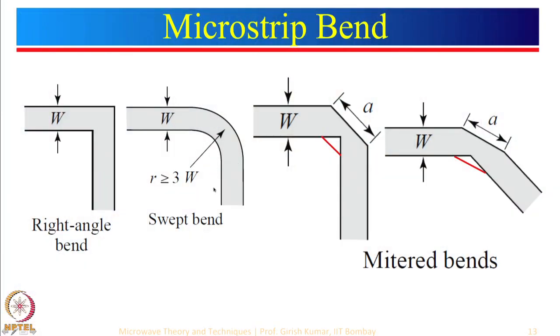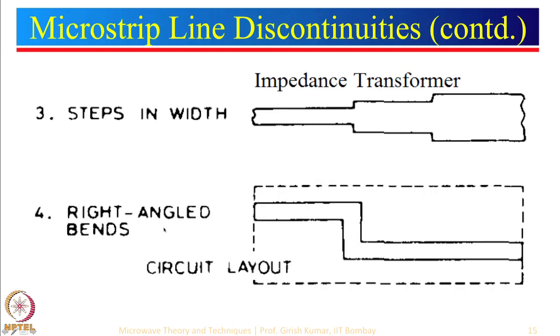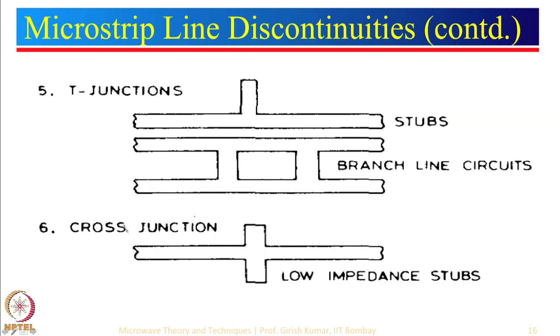Bends are very common in most circuit configurations. Instead of using a right-angle bend, use a curved bend which is the most preferable. If not possible, use two mitered bends for a right-angle turn. Even if the angle is not 90 degrees, I recommend using the curved or mitered configuration. We also looked at different types of microstrip discontinuities: open end, gap, step in width, right-angle bend, T-junction, and cross junction.